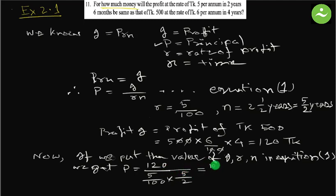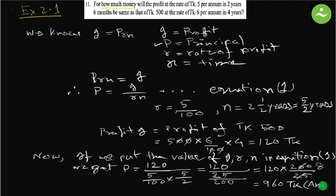P equals to 120 divided by 5 into 5 is 25, 100 into 2 is 200, equals to 120 into, we have to apply the reciprocal fraction, so 200 by 25. Now if we simplify, 25 and 200, this will be 8 into 120 is 960 taka and that is the answer, that is the principle.